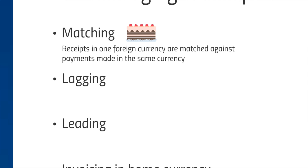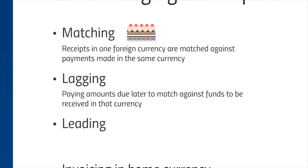Lagging and leading are similar elements — almost like sub-elements of matching. Lagging is where you pay amounts due later to match against funds received in that currency. For example, if Carol's $12,000 isn't expected until September, she makes an agreement with the oven manufacturer to pay in September, perhaps paying a little more to cover the interest lost. You could also use lagging if you believe the exchange rate is going to move in your favor — waiting until September could mean the exchange rate moves favorably and costs you less.